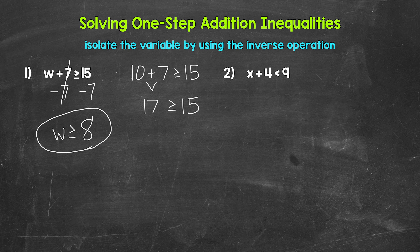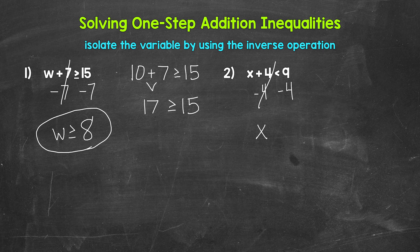Let's move on to number two, where we have x plus four is less than nine. We need to isolate that variable of x. We are adding four to x, so we need the inverse operation of addition — that's subtraction. So subtract four from the left side. Whatever we do to one side, we have to do to the other, so subtract four from the right side as well. These fours cancel each other out, and x is now isolated. Nine minus four gives us five, so x is less than five.